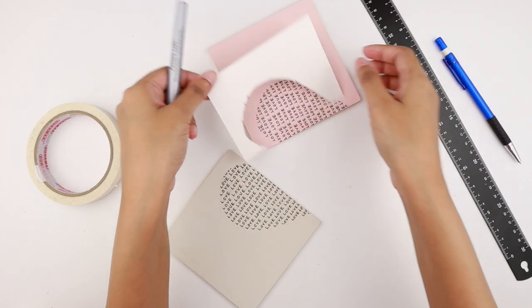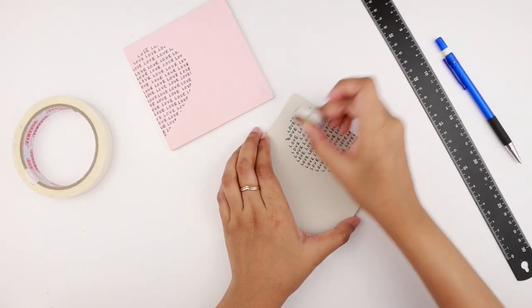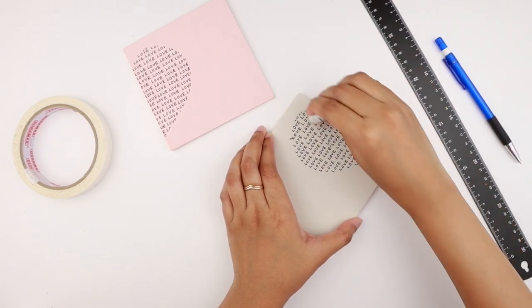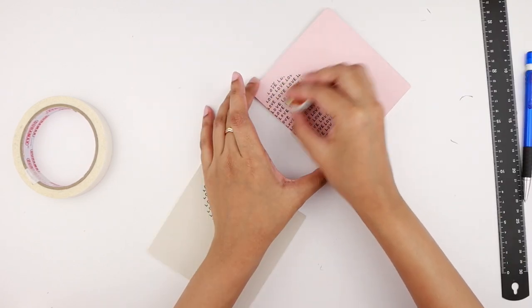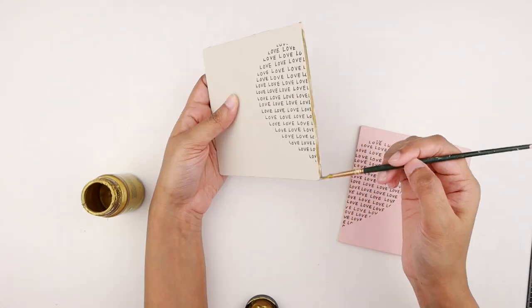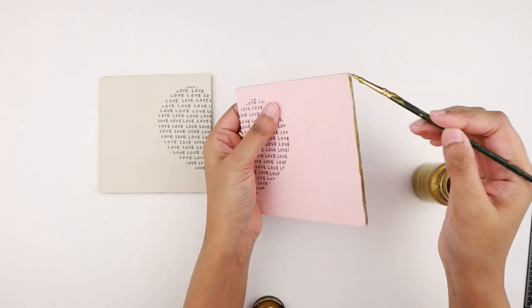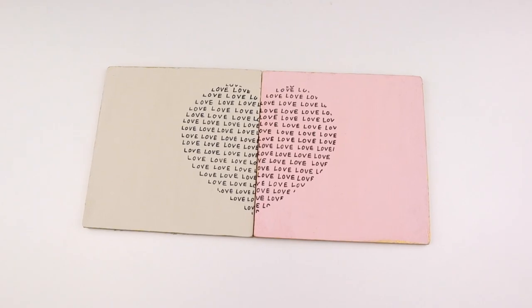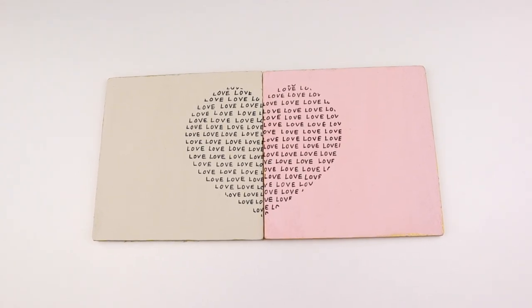Then I removed the stencil and erased all the pencil lines. I took gold acrylic paint and painted the edges of both the coasters as a finishing touch. This finishes off our DIY handwritten heart coasters. When we match the two coasters, we get a heart shape.